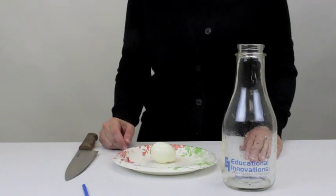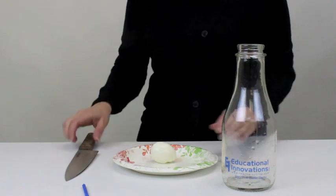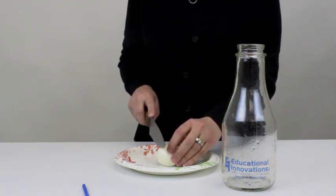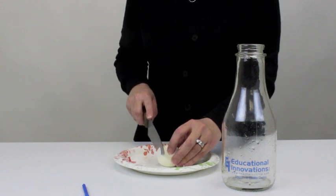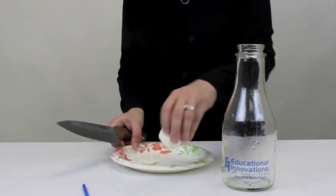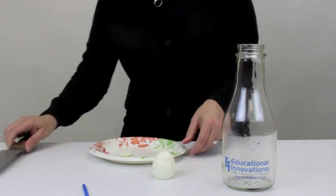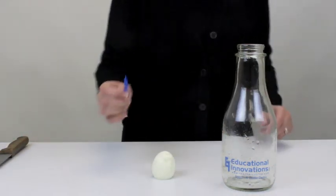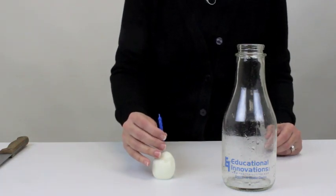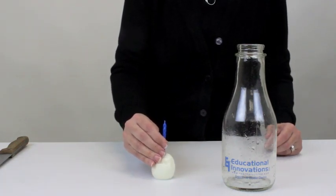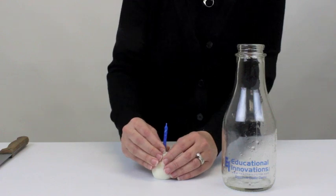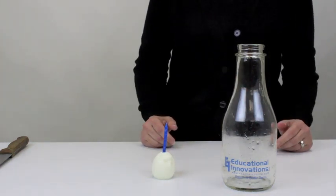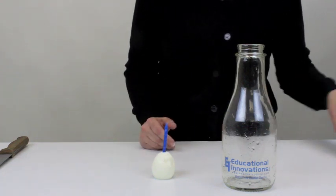Another lesser known activity is called the birthday egg in a bottle. The first thing you're going to do is cut a small piece off the bottom of the egg so that it stands upright, like so. Then, you place a candle on the top of the egg. This was one of my students' favorite activities because every time we had a birthday in the classroom, we performed this activity.